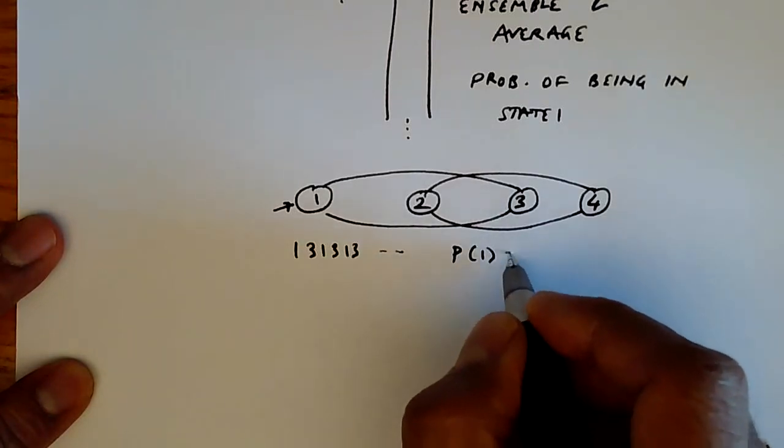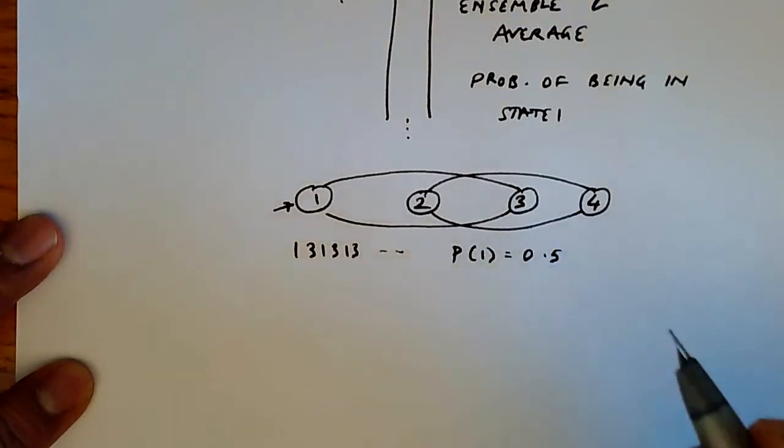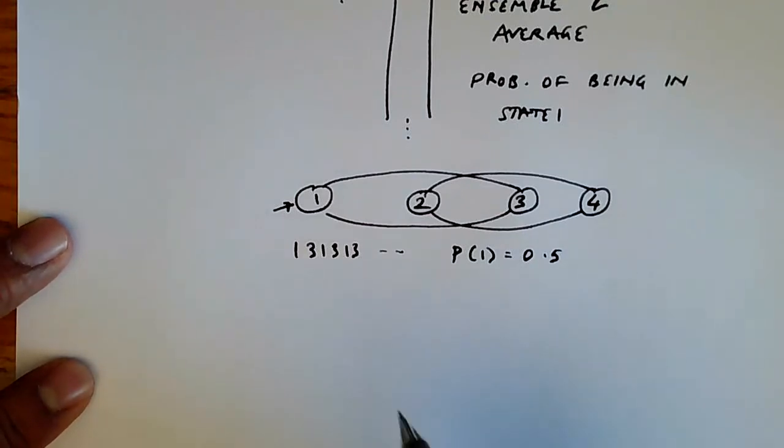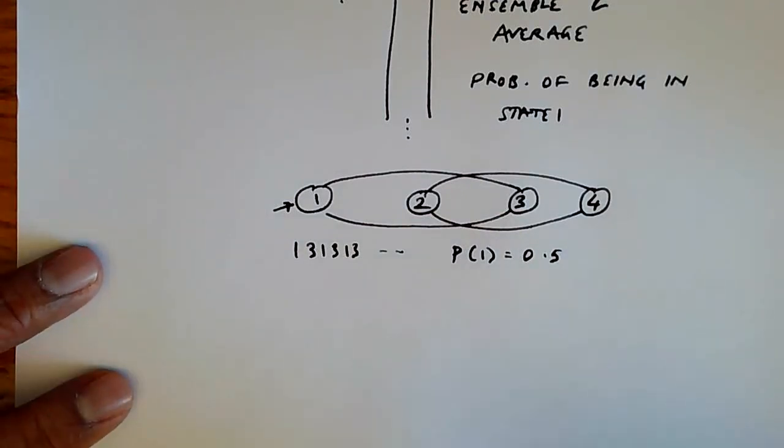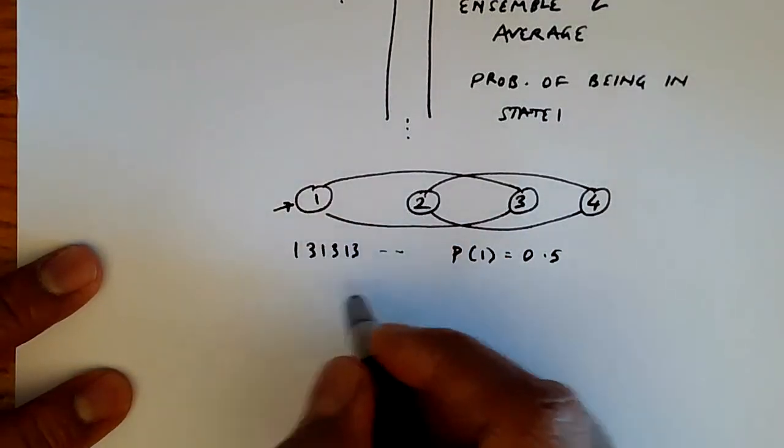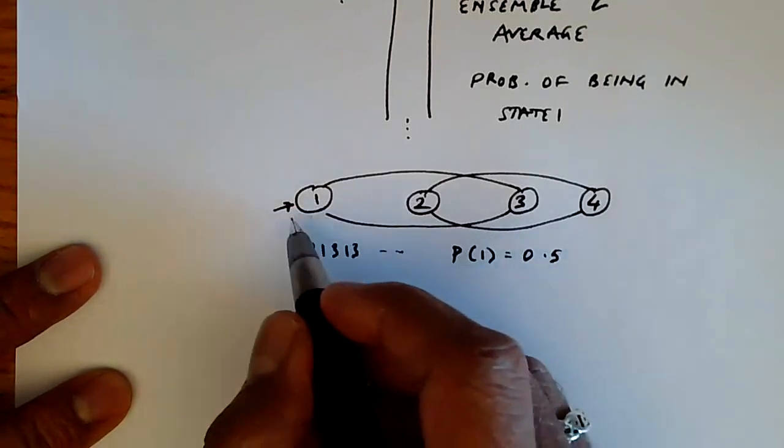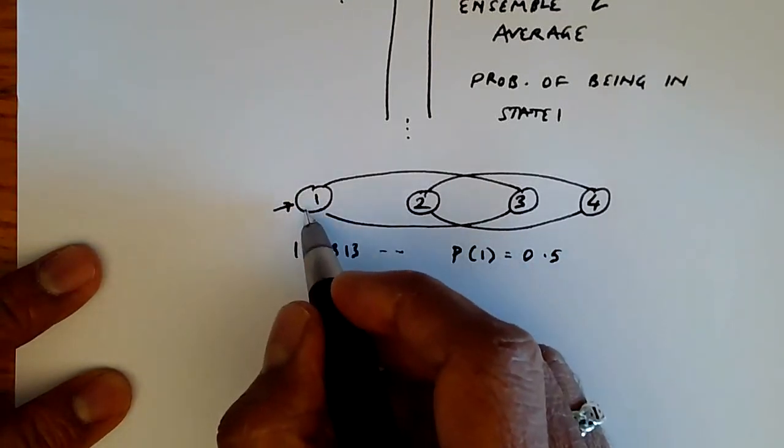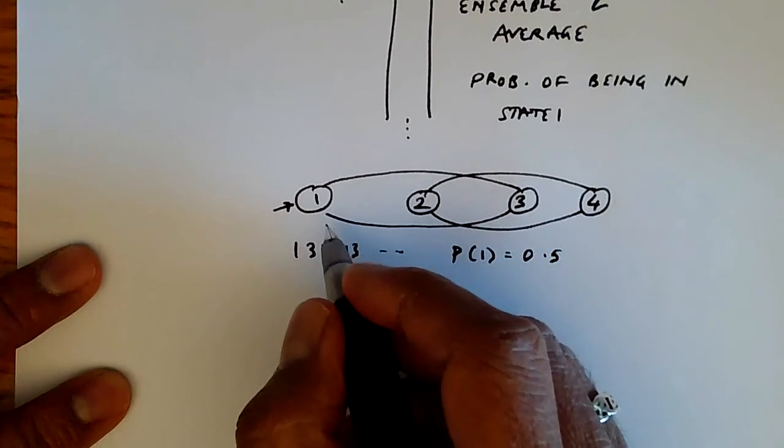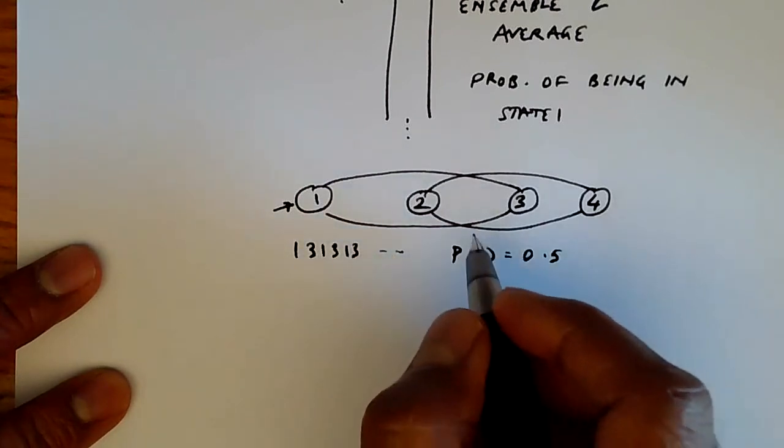But the probability of being in state one is going to be 0.5. However, if I take an ensemble where the initial point could be either here or here, then for those chains that start with 1, 3, we will have the probability of being in state one being 0.5.